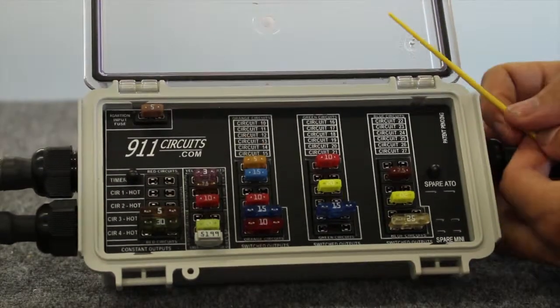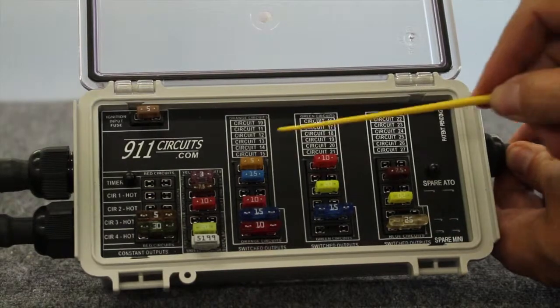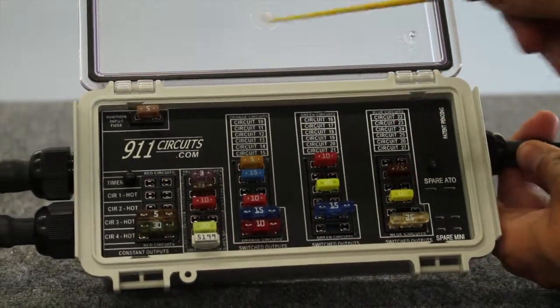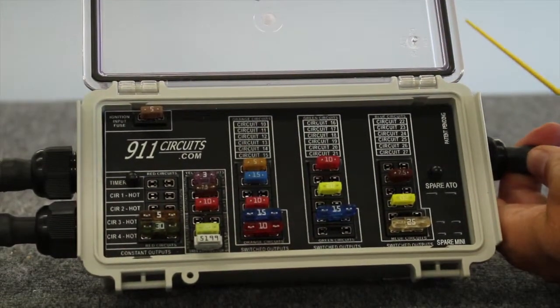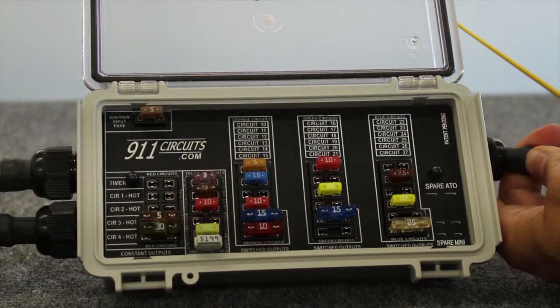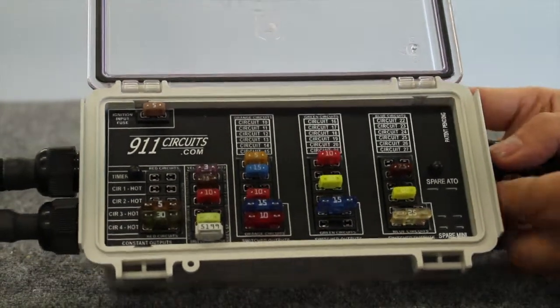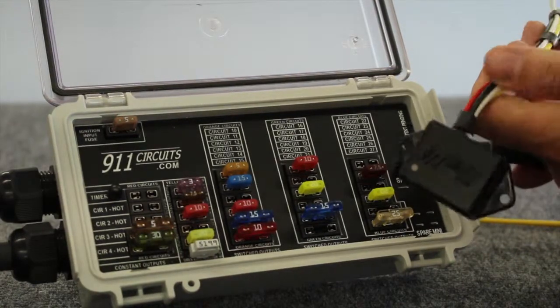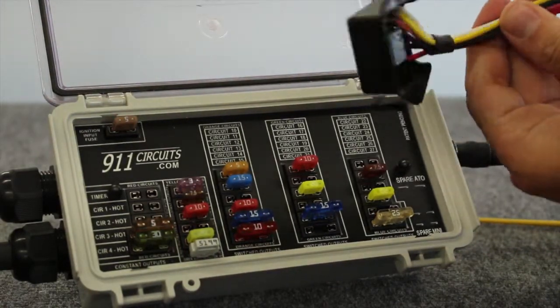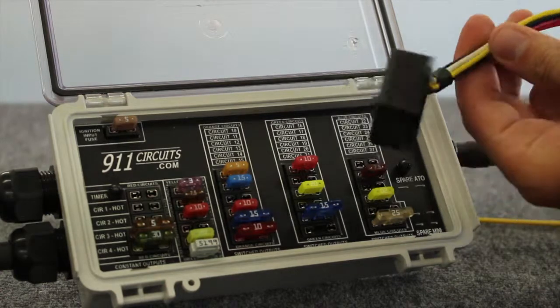So we've talked about the fact that it's 27 circuits and that these three circuits are ignition controlled via the fuse up here. What we haven't talked about is what if you want a timer on your circuits. Super simple. This is how we do it. This is the 911 Circuits timer, and it has a lot of the features that you're used to plus some that you don't.